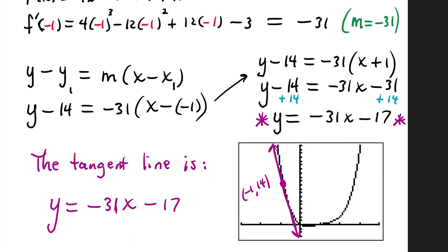I took a screenshot of the graph from my TI-84 emulator. This is the graph of the original function f of x. If I go to the point (-1, 14) and draw a tangent line that touches the graph at that point, that line has a slope of negative 31 and touches the y-axis way down at negative 17.